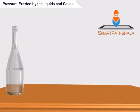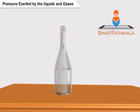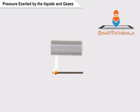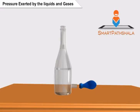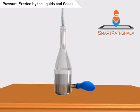Now let us do another activity. Take a plastic bottle and a glass tube, heat it slightly and insert it near the bottom of the bottle. If there is any leakage, seal it with molten wax and place a good quality rubber balloon towards the other end of the glass tube. Now fill the bottle completely with water and you can observe the bulge in the rubber balloon.